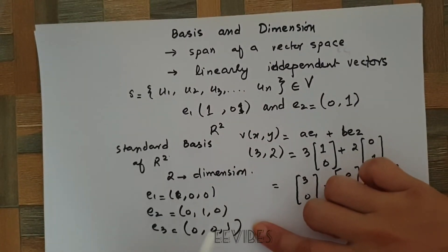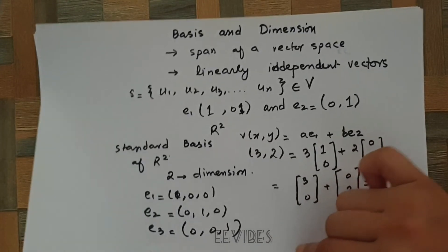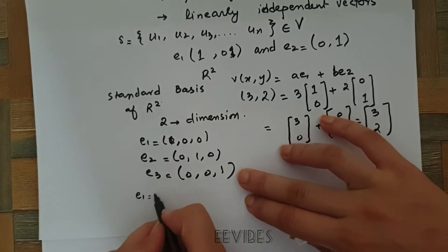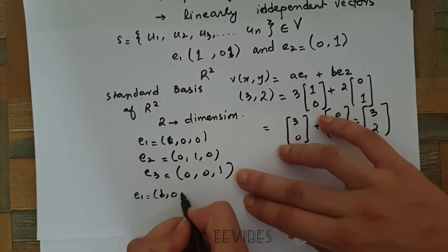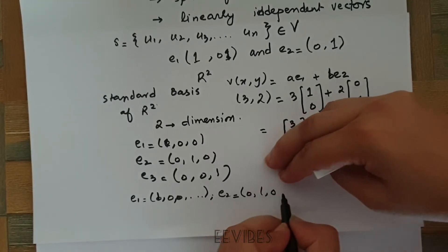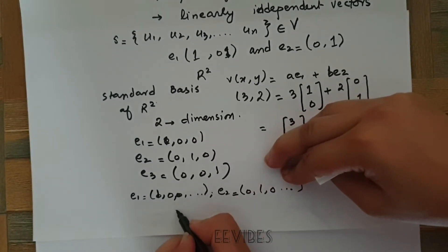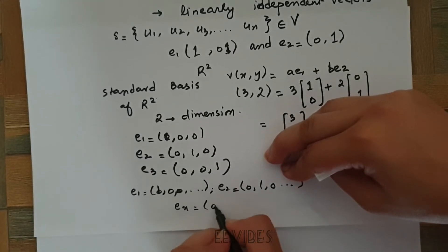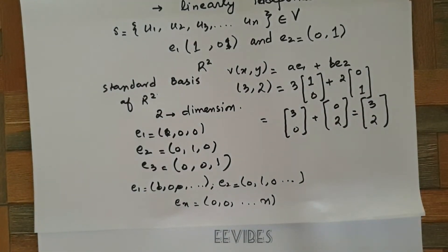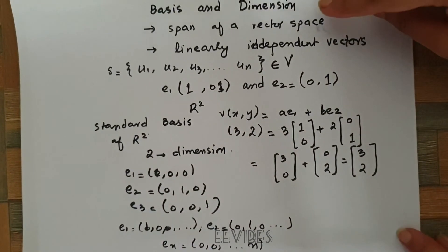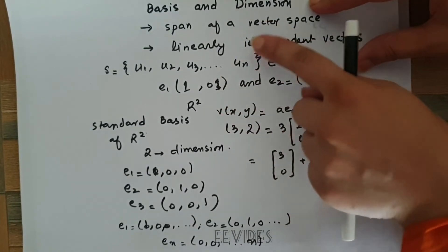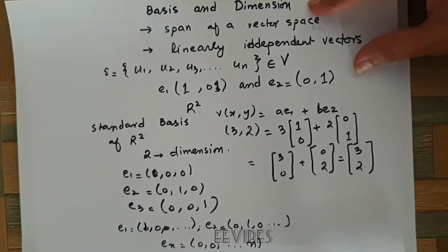For an n-dimensional space, the standard basis will have n components, where e1 = (1, 0, 0, …), e2 = (0, 1, 0, …), and so on. We have now verified the first property: that the given set of vectors spans that particular vector space.